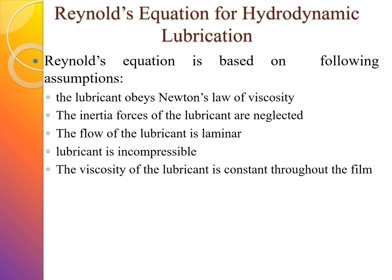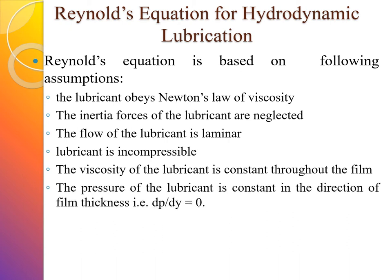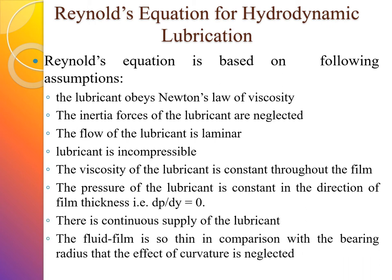The viscosity of the lubricant is constant throughout the film. The most important assumption is that the pressure of the lubricant is constant in the direction of the film thickness — the film thickness is in the direction of y — so ∂p/∂y = 0. There is a continuous supply of lubricant, and the fluid film is so thin in comparison with the bearing radius that the effect of curvature is neglected.